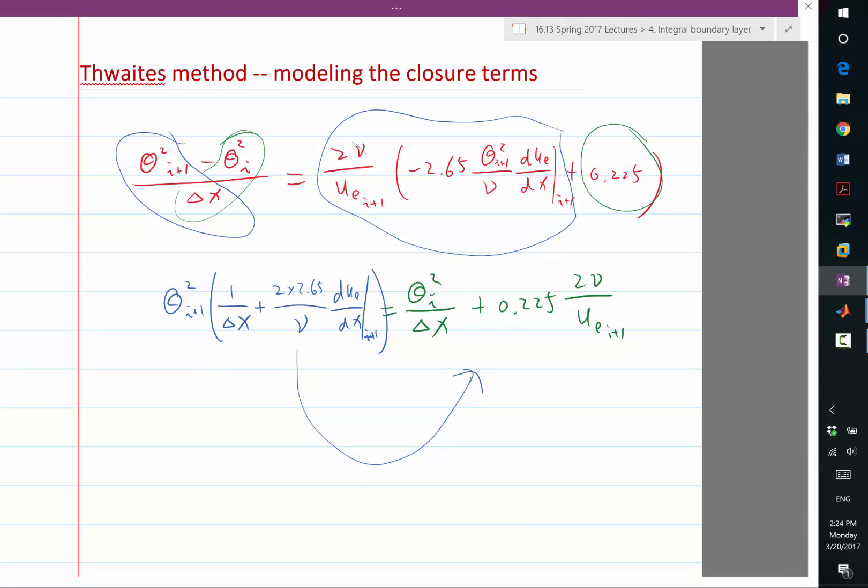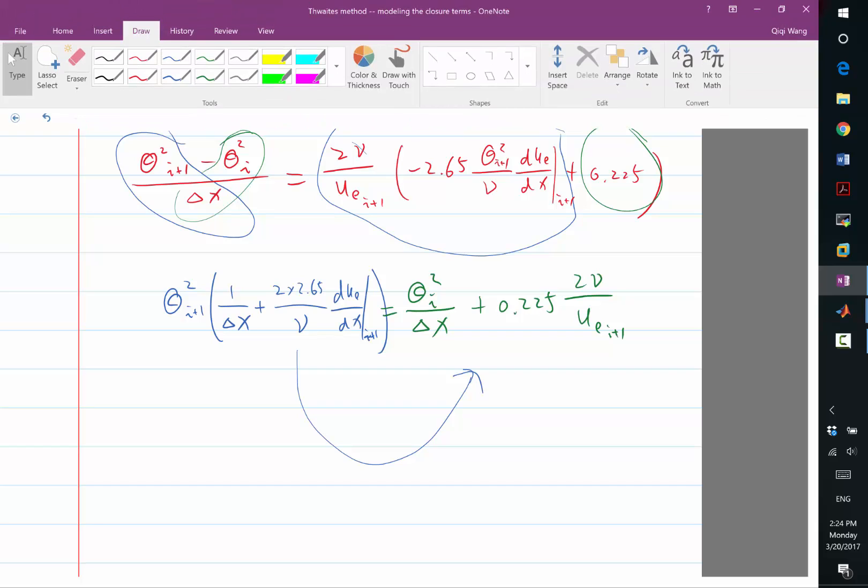Basically what I need to do is divide this onto the right-hand side to calculate theta i plus 1 square. So I'm running out of time, so let's do that first thing next lecture, so that we have a good code for calculating the evolution of theta for an arbitrary outside boundary layer profile.